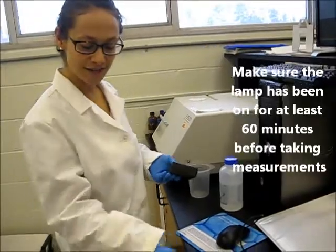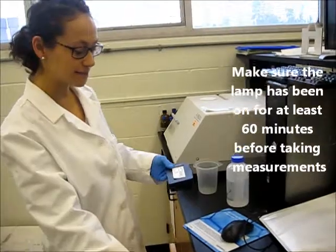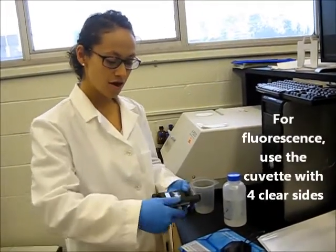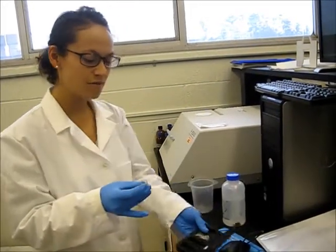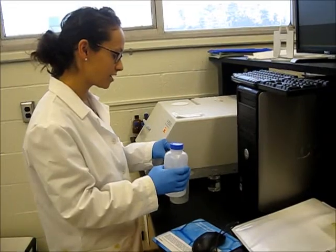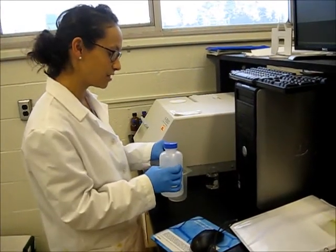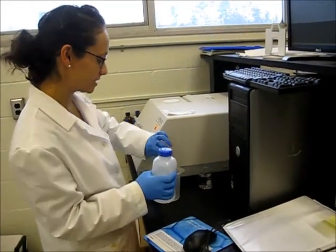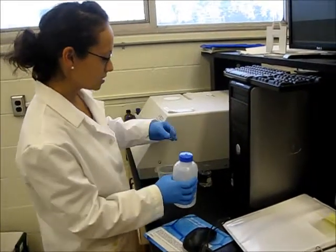The first thing you want to do is find the cuvette. It's going to be in the drawer that's right to the right of the fluorescent spectrophotometer in this black plastic box. When you're handling the cuvette, try and make sure that you're using gloves first of all, but also that you are touching just the corners of the cuvette so that you can minimize the amount of smudging that you put on the walls. The first thing you want to do is just rinse out the cuvette three times with deionized water.